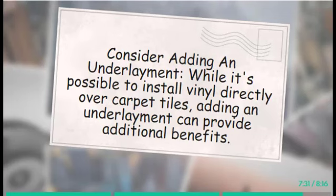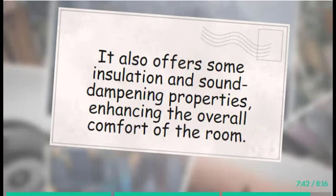Tip 4: Consider adding an underlayment. While it's possible to install vinyl directly over carpet tiles, adding an underlayment can provide additional benefits. An underlayment will help create a smooth and stable surface for the vinyl, reducing the risk of any imperfections from the carpet tiles affecting the new flooring. It also offers some insulation and sound dampening properties, enhancing the overall comfort of the room.